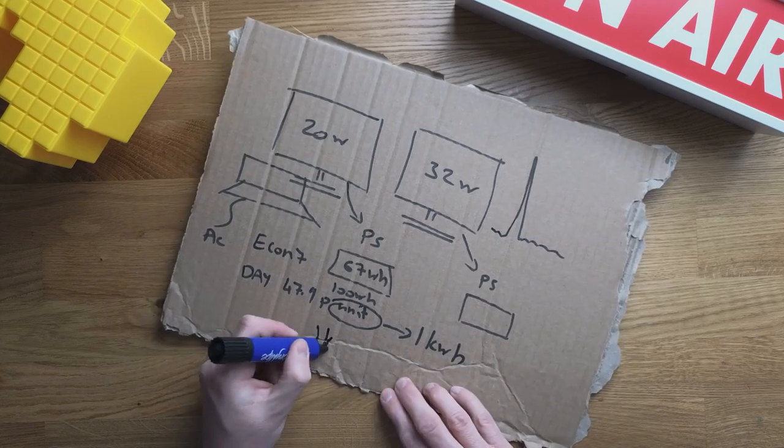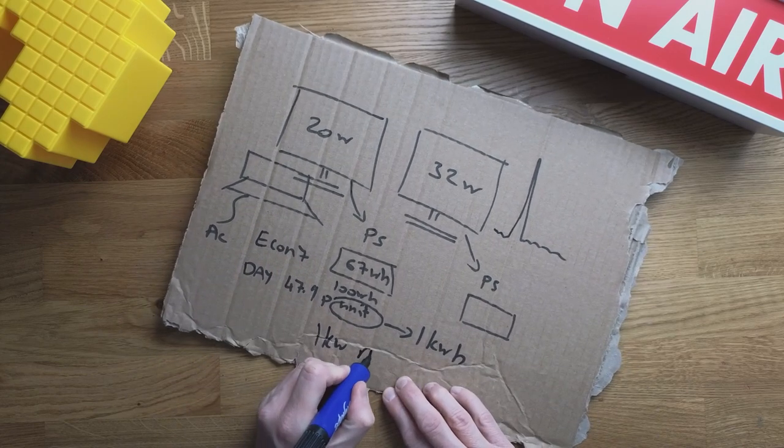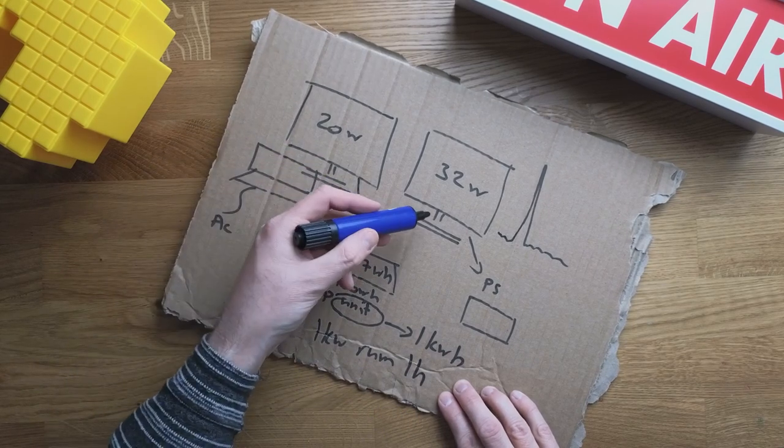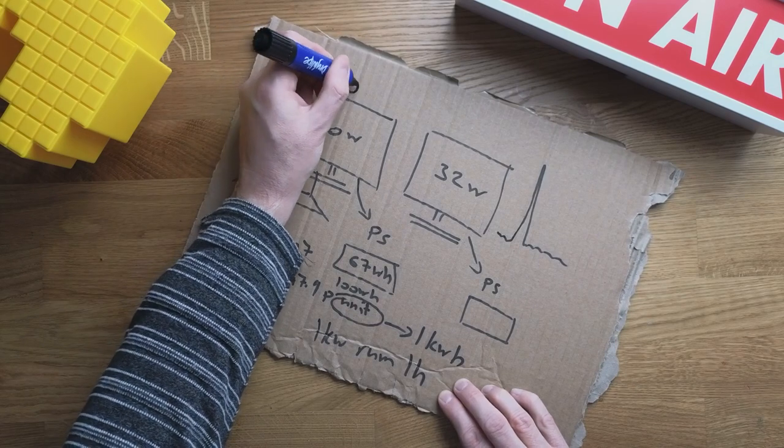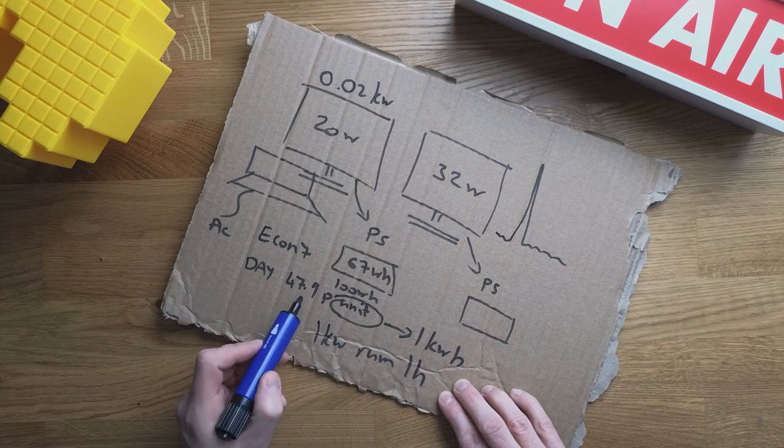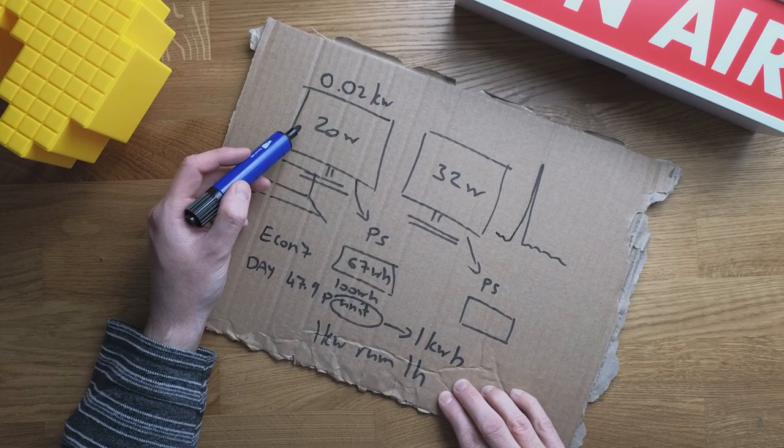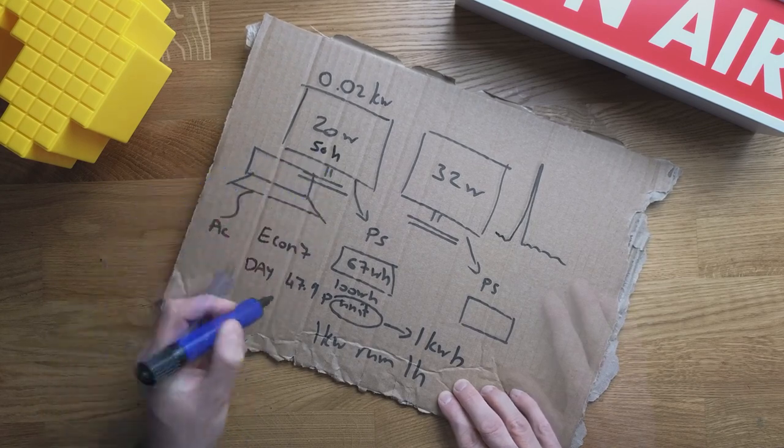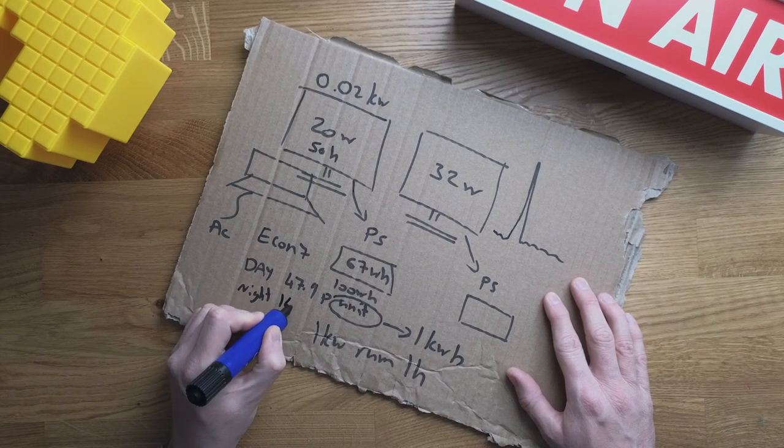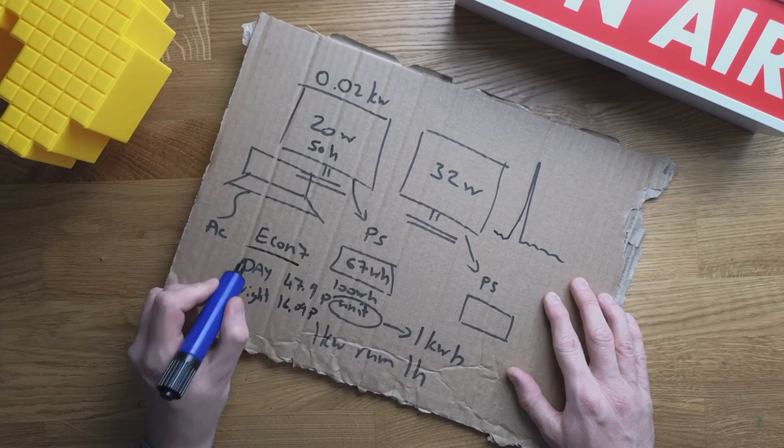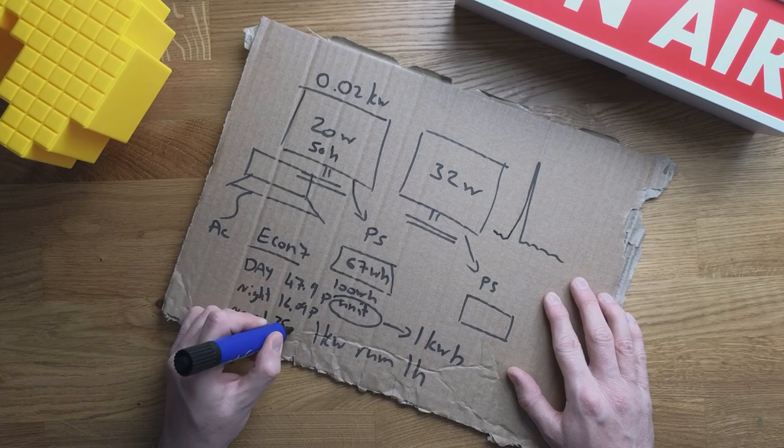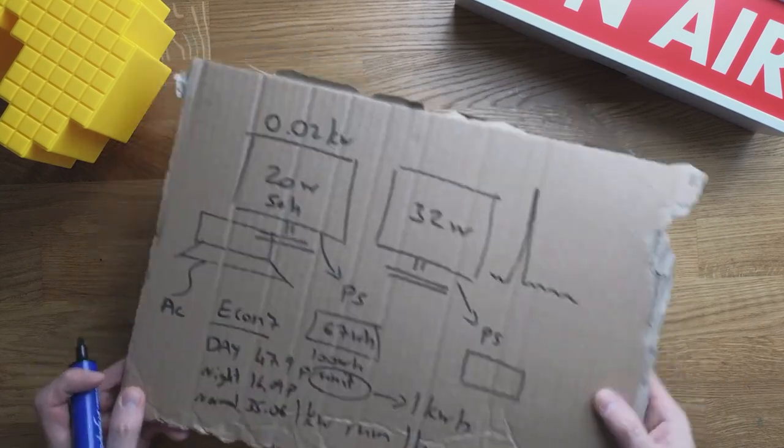A unit is one kilowatt hour. So it's one kilowatt run for one hour. This isn't a kilowatt. This actually is 0.02 kilowatts. So to use a unit of electricity, 47 pence, I'd have to run this for 50 hours. That would cost me 47 pence in the day. Because I'm on economy seven, I have two rates. I have night rate, and night rate costs 16.09 pence. For people who don't have economy seven, at the time of recording, I'm going to call it normal rate, it's 35.06 pence per kilowatt hour.